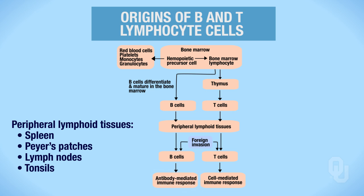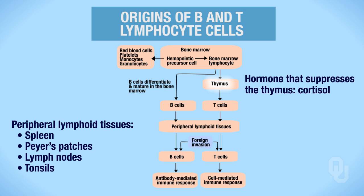T cells work a little differently. The immature T cells leave the bone marrow and go to the thymus. If you recall, we briefly mentioned the thymus when we talked about hormones—specifically one hormone that suppresses the thymus, which is cortisol. When these immature T cells arrive in the thymus, they get trained and tested before they're able to leave. Here's the thymus, and here's what happens.